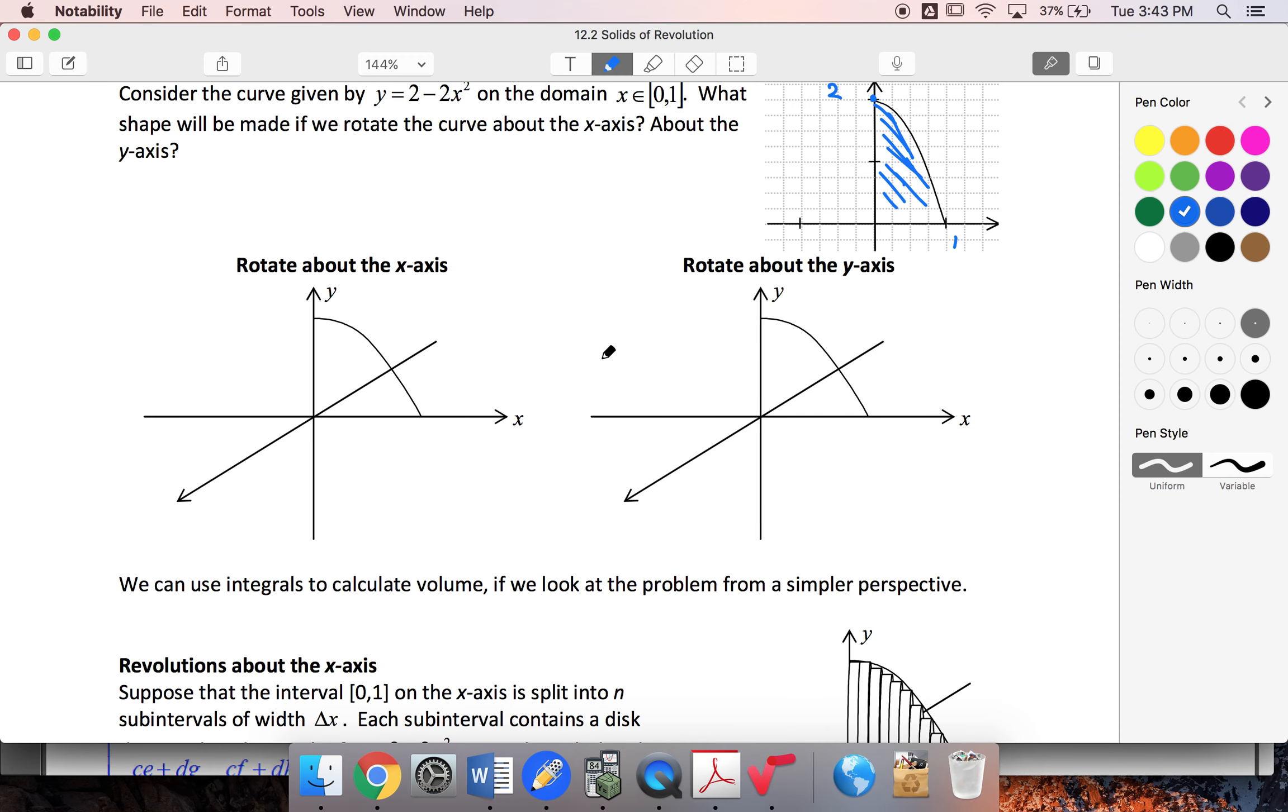So rotating it about the x-axis, then I end up with circular cross sections that would come out this way. And we end up with sort of that sideways dome shape. If I take it about the y-axis, now my circular base is going to be down here, and I've got this shape that comes down.